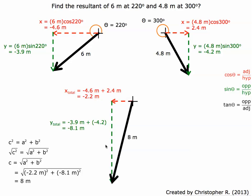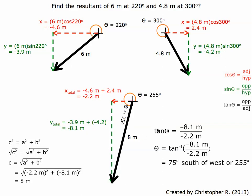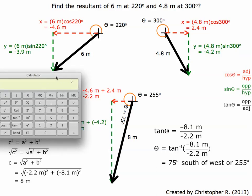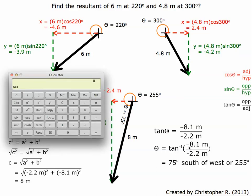The next step is to calculate the angle. We have two ways: we can calculate the angle going all the way around from the x-axis — it's going to be bigger than 180 but less than 270 — or we can calculate this small interior angle. To find the angle we use the tangent function, opposite over adjacent. To isolate the angle, we use the inverse tangent. We divide 8.1 by 2.2 — not using the negative signs because they cancel out.